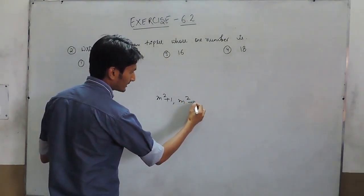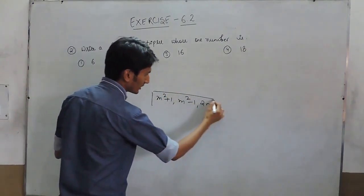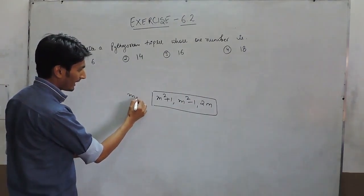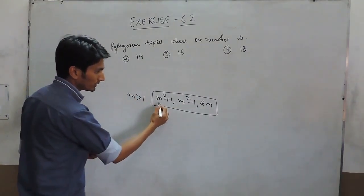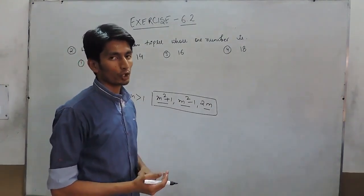This is the general formula for any natural number where m is greater than 1. So these 3 numbers must be a Pythagorean triplet.